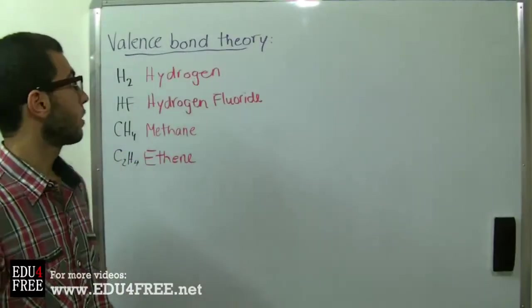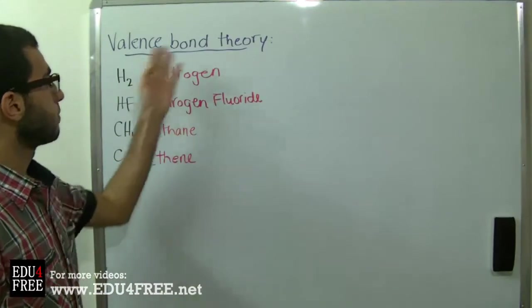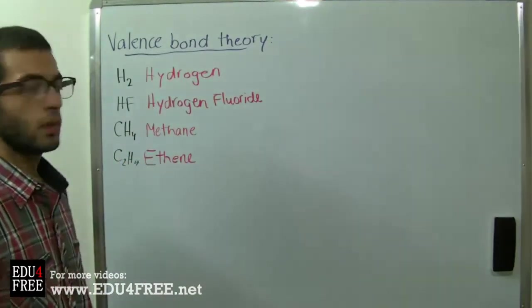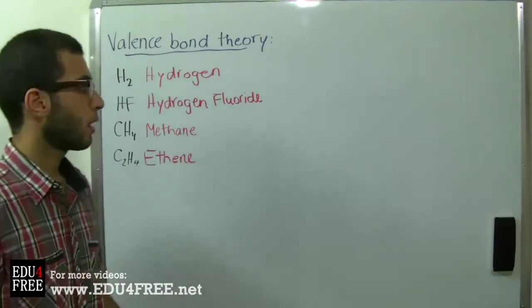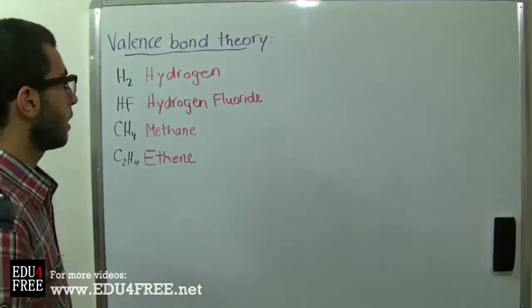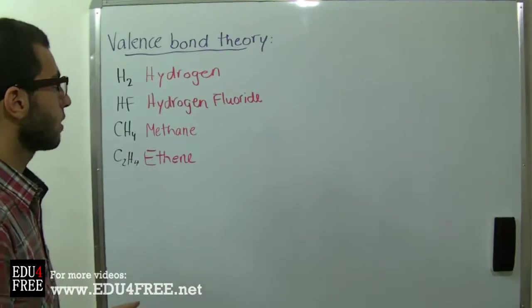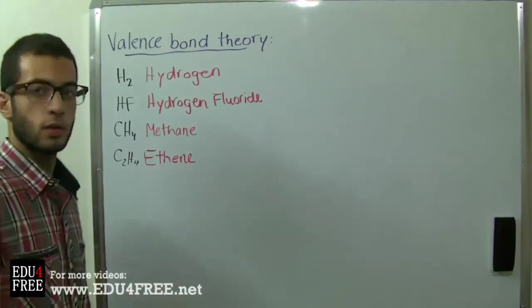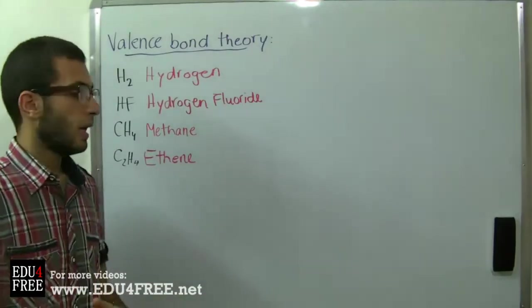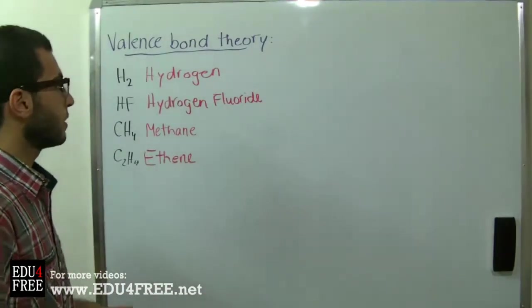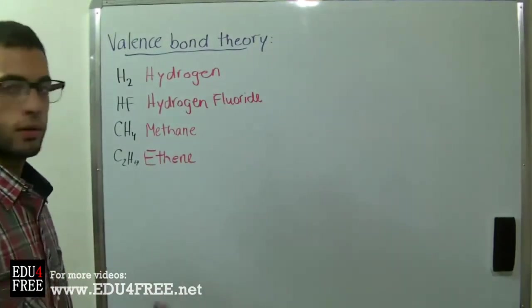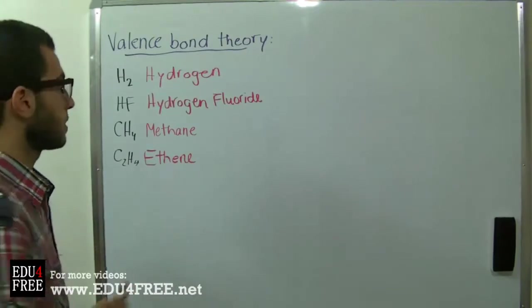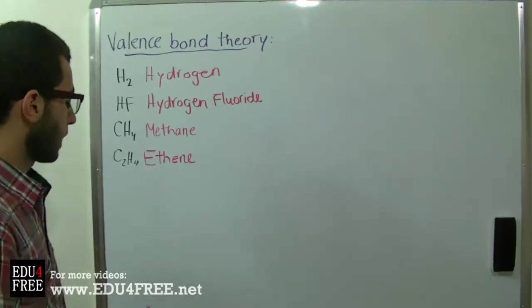Today we are going to talk about the valence bond theory. The valence bond theory regards the formation of the covalent bond in a different vision than the other previous theories.